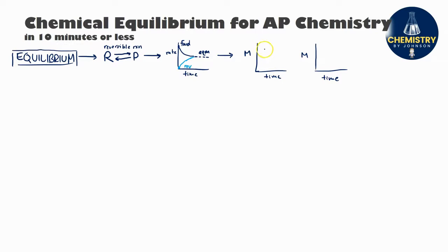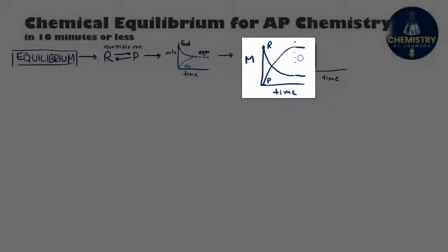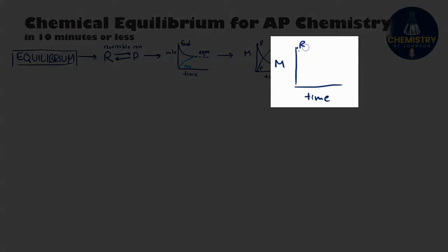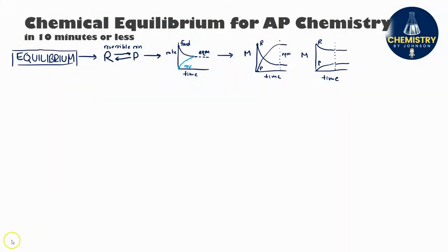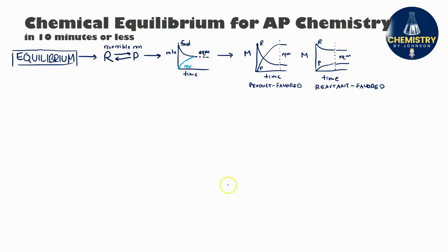We can also see equilibrium form by looking at concentrations of reactants and products. If I have lots of reactants at the beginning, they will decrease as the reaction goes on but eventually level off — that's when equilibrium has been achieved. Products start at essentially none and slowly increase, leveling off once equilibrium is established. It's also possible that at equilibrium the reactants don't decrease much and very few products are made — that's a reactant-favored equilibrium. The first graph represents a product-favored equilibrium and the second represents a reactant-favored equilibrium.